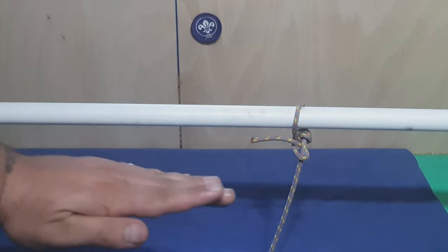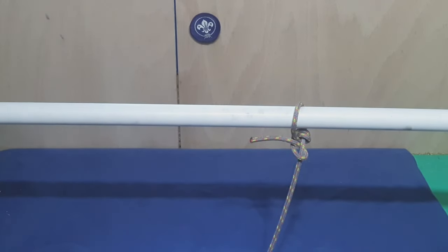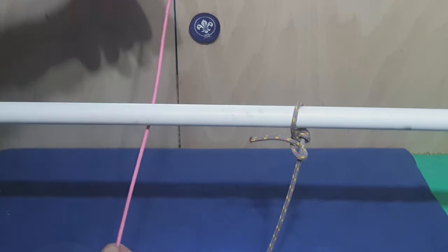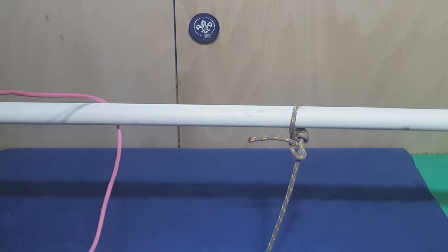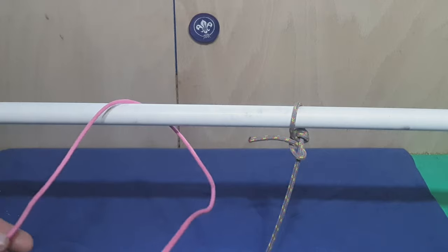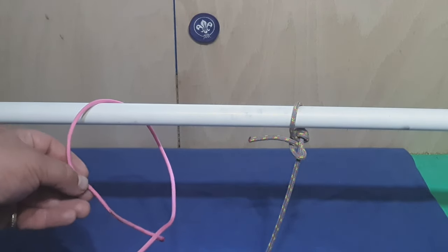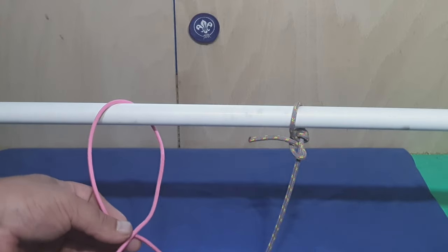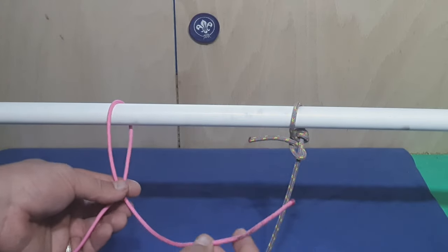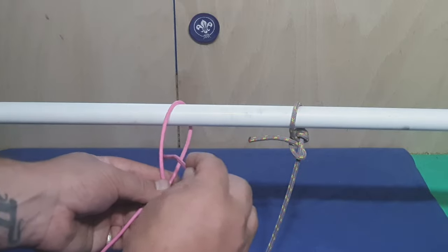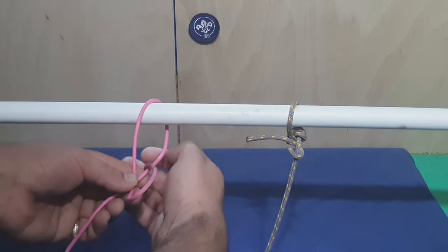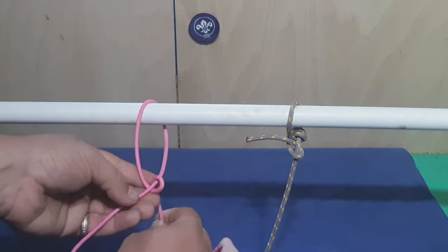Okay, so imagine this is your tent peg going this way, so you're coming in and going around your tent peg. Keep your working end in your left hand and then off towards your tent or tarp in your right hand. So from there, take your working end and come underneath, and then drop back down the loop to form this one round turn.